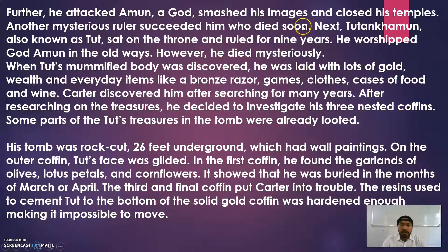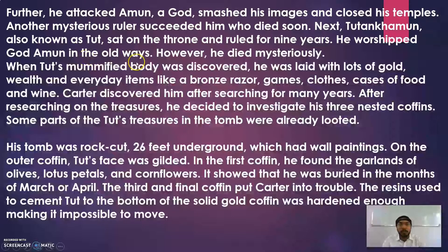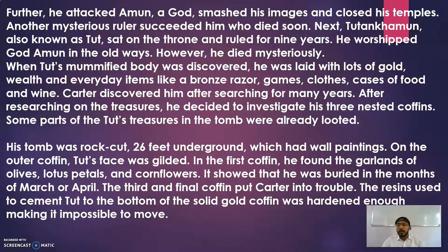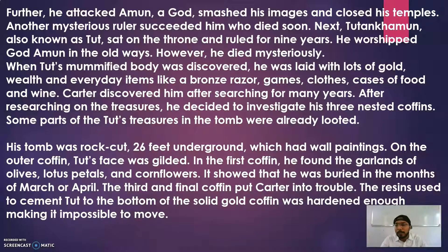Another mysterious ruler succeeded Akhenaten but died soon, with little information available about him. Next, Tutankhamun — also known as Tut — sat on the throne and ruled for nine years. He worshipped god Amun in the old ways. After this mysterious ruler, Tutankhamun came to rule and again started the old practices of worshipping Amun. While Akhenaten had promoted Aten and destroyed the temples of Amun, Tutankhamun reconstructed them and implemented the old ways, worshipping Amun again. However, he died mysteriously.